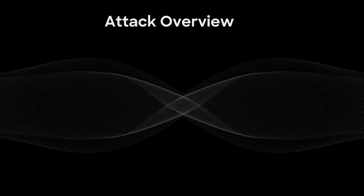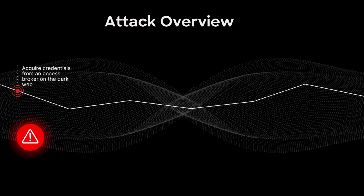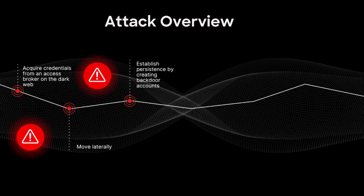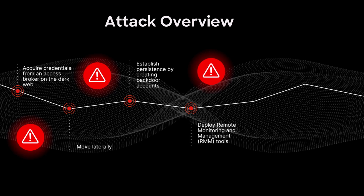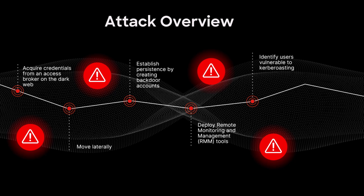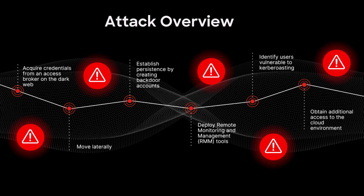In this attack, the adversary executed a sophisticated cross-domain kill chain. The stolen credentials, likely obtained through phishing attacks or info-stealers disguised as legitimate software, were sold by an access broker to the adversary on the dark web. Using these credentials, the attacker gained an initial foothold. They then moved laterally and established persistence by creating backdoor accounts and deploying remote monitoring and management tools. Further targeting included identifying users vulnerable to Kerberoasting. Finally, the attacker obtained additional access to the cloud environment by modifying key cloud configurations, expanding their attack reach.